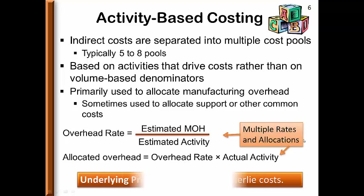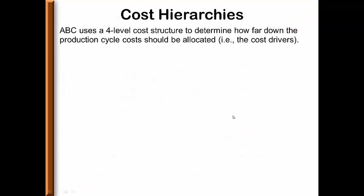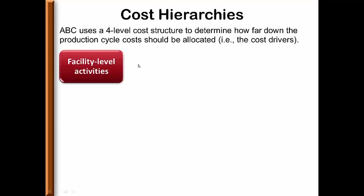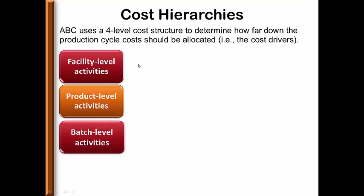The underlying premise is that activities underlie cost. ABC systems typically use a four-level cost structure, which helps us determine how far down the production cycle the cost should be allocated. Let's look at these four cost driver bases: facility-level activities, product-level activities, batch-level activities, and unit-level activities.